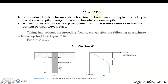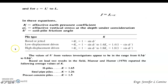L prime is approximately equal to 15D. At similar depth, unit skin friction in loose sand is higher for a high-displacement pile compared with a low-displacement pile. Bored or jetted piles have the lowest unit skin friction compared with driven piles. Taking these factors into account, for Z from 0 to L prime, unit frictional resistance F equals K times sigma sub O prime times tangent of delta prime. For Z from L prime to L, F equals F at Z equal to L prime. K is the effective earth pressure coefficient, sigma sub O prime is the effective vertical stress, and delta prime is the soil-pile friction angle.